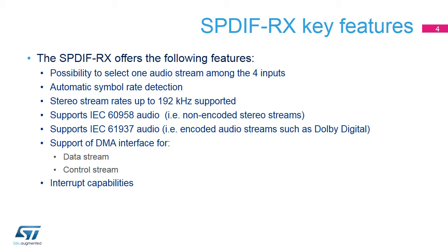The possibility to select one audio stream among the four inputs — note that only one stream can be decoded at a single time. Automatic symbol rate detection: if the SPDIF-CLK frequency is high enough, the SPDIF-RX will be able to decode the incoming stream and provide to the application information about its estimated sampling rate. Stereo stream rates up to 192 kHz are supported. The SPDIF-RX decodes audio frames compliant with IEC-60958, which describes non-encoded stereo streams. The SPDIF-RX also supports encoded audio streams, such as Dolby Digital, as described in IEC-61937.